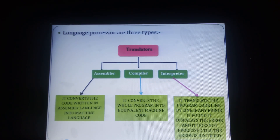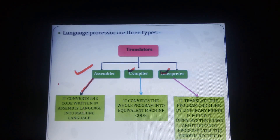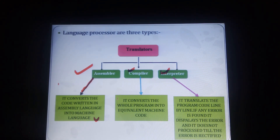There are basically 3 types of translators: assembler, compiler, and interpreter. These 3 types of translators convert simple language into machine code. The assembler converts code written in assembly language into machine language. The compiler converts the whole program — whether a C program or Java program — into equivalent machine code.